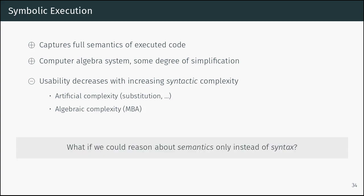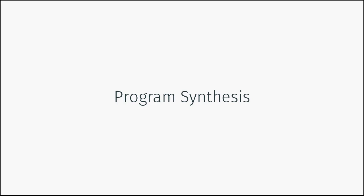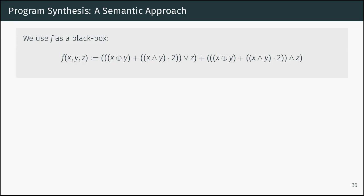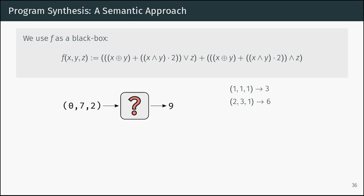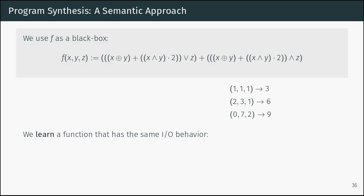The question remains: is there a technique that can reason about semantics only instead of looking at syntax? The answer is yes — namely, program synthesis. We have the same function, call it f, and treat it as a black box with some inputs and an output. We generate random inputs, execute the code, observe its output, and store input-output samples. We do this several times. Then we want to learn a function that has exactly the same IO behavior.